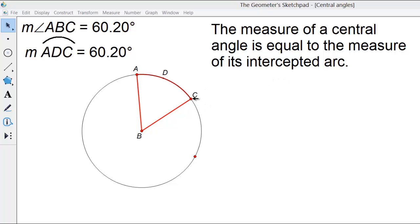Now we can move this point so that the angle is a different measure, and it doesn't matter where we move it to. The measure of the central angle, which is angle ABC, is always equal to the measure of its intercepted arc.